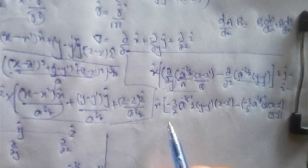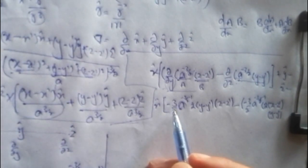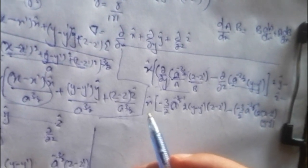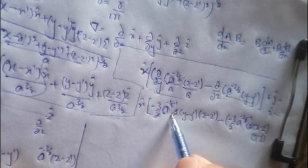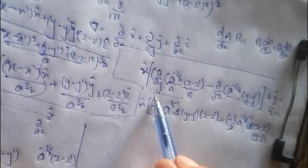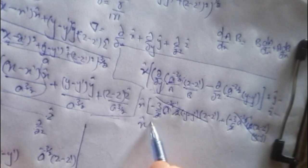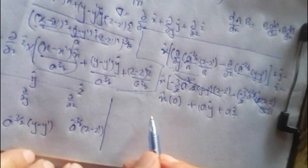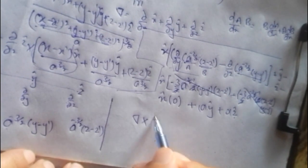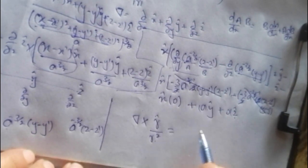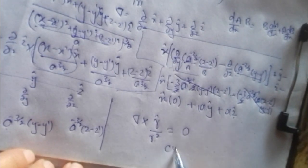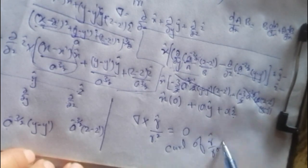In the resulting equation, the factor of 2 cancels throughout, and the negative signs combine such that each cross term cancels with its counterpart. We get x-hat times 0, plus y-hat times 0, plus z-hat times 0 for all components. Therefore, del cross (r-hat / r²) equals zero — the curl of r-hat divided by r-squared is equal to zero.